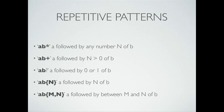Let's look at a couple of repetitive patterns. One thing you want to do is repeat things as you search through text. To do A followed by any number of B, you do A, B asterisk. AB plus is A followed by any n greater than 0 of B. AB question mark is A followed by 0 or 1 of B. AB with curly braces is A followed by exactly n of B. If you have two numbers in the curly braces, you're specifying a range that can possibly be matched.